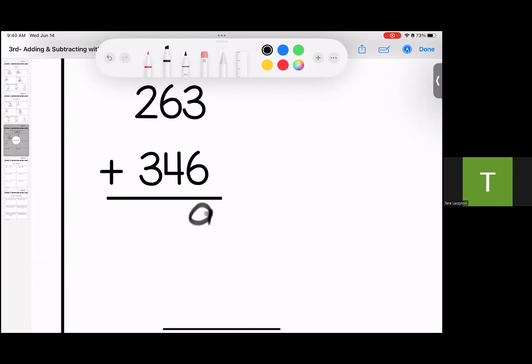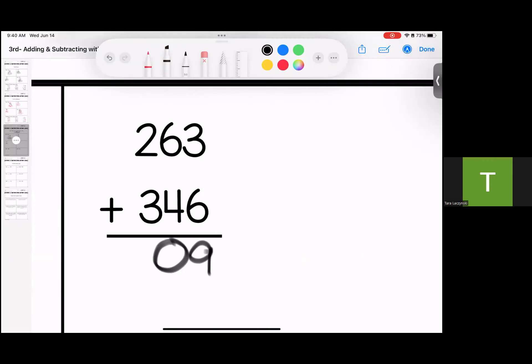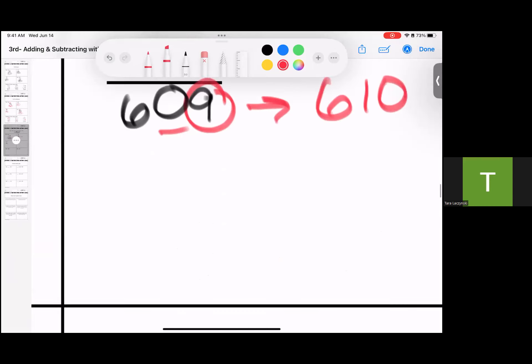6 and 3 is 9. 6 and 4 is 10, I carry. 3 plus 2 is 5, add 1 is 6. Rounded to the nearest 10s is 610. 5 or above, give it a shove. I have a 9.